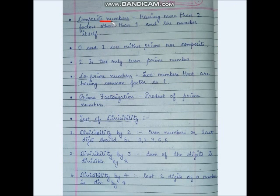Next are composite numbers, which have more than 2 factors — other than 1 and the number itself. That means there are other numbers besides 1 and the number itself that can divide it. So those numbers are called composite numbers.